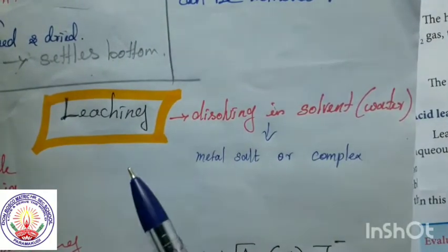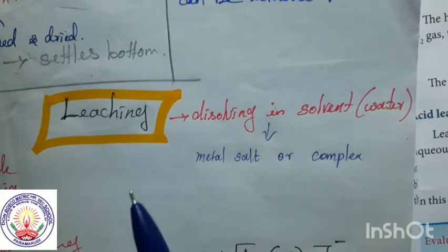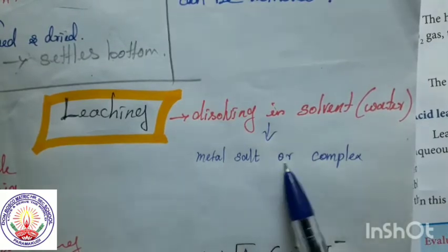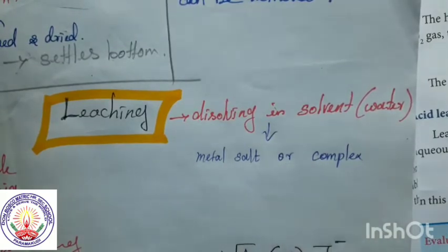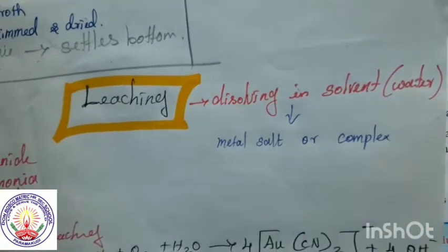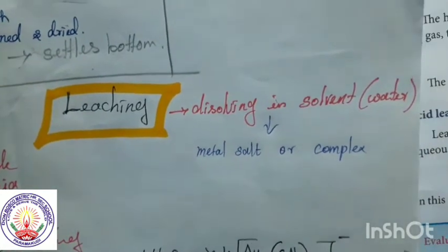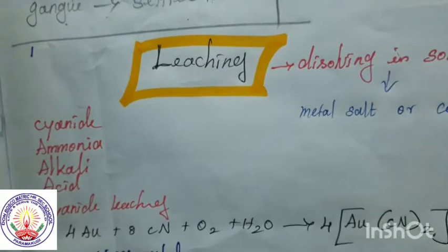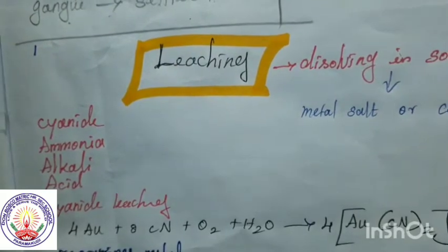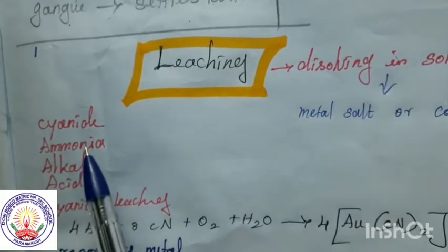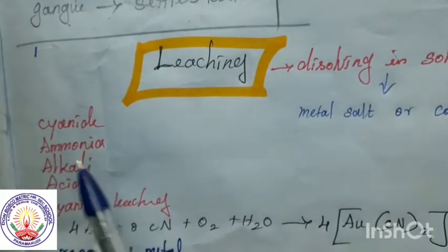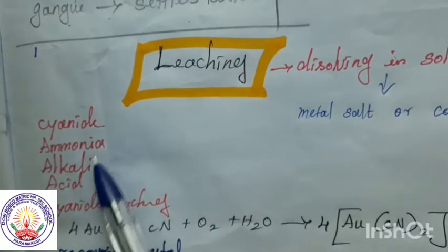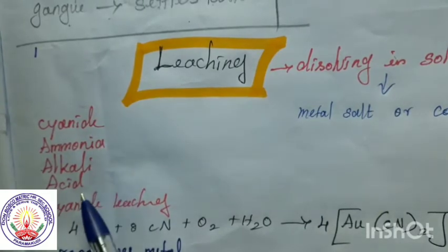When we dissolve the ore in a suitable solvent with chemicals, we get a metal salt or complex. The chemicals we use here are cyanide, ammonia, alkali, and acid.